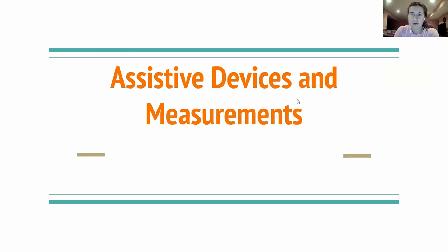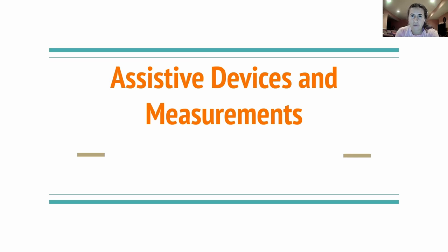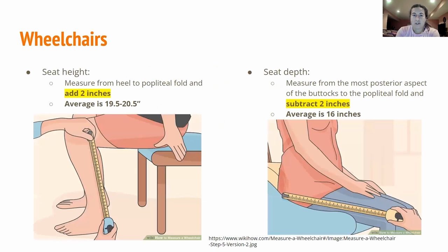Today we are going over assistive devices and the measurements for them. There are a variety of different assistive devices that show up on the boards — most of them are going to be related to wheelchairs, crutches, canes, and walkers. I have everything in here that is going to be covered for the boards, so let's get started.